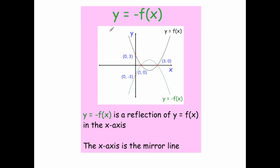The first transformation is y equals minus f of x. This reflects the graph in the x-axis, so the x-axis is the mirror line — it flips the curve vertically. So this point, which was (0, 3), reflects down to (0, -3). All the points above the x-axis reflect down, and all points below reflect up.